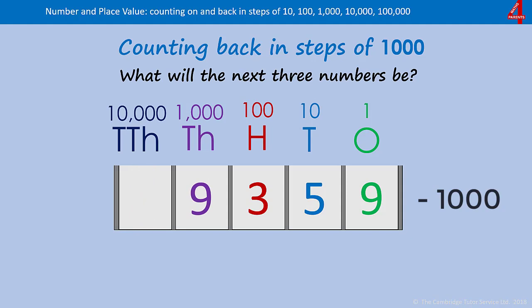Nine thousand, three hundred and fifty-nine — and then we just keep counting back in thousands, taking that thousands digit down lower.